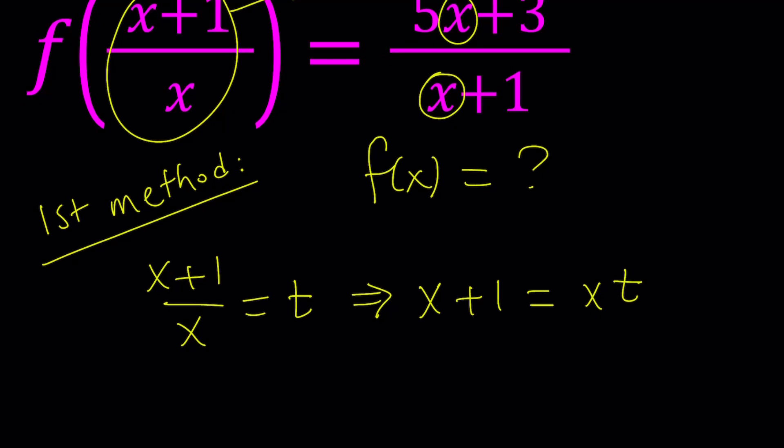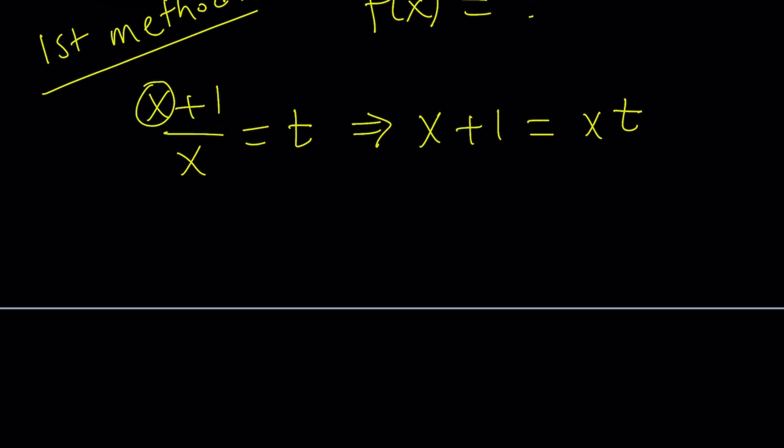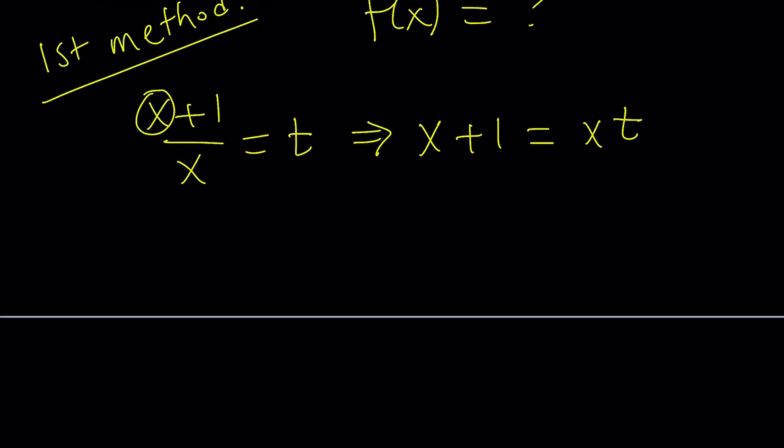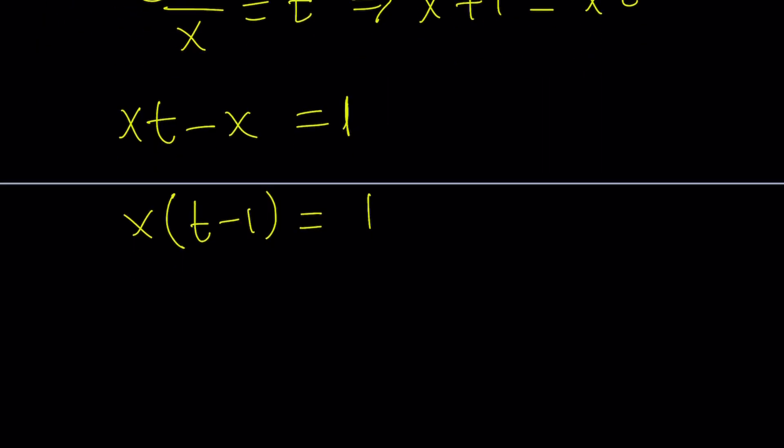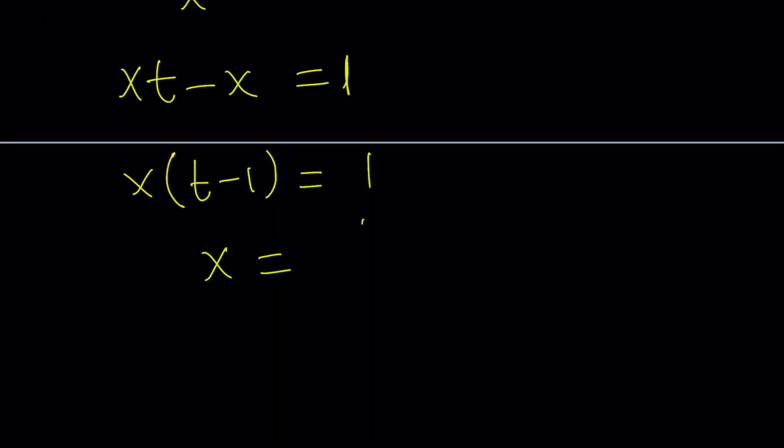My goal is to solve for x here. I would like to collect everything that has x in it on the same side. Bring down the x over here, like subtract. xt - x = 1. Switch sides, and then factor out x: x(t-1) = 1. And then finally, divide by t-1, and you're going to get x = 1/(t-1).